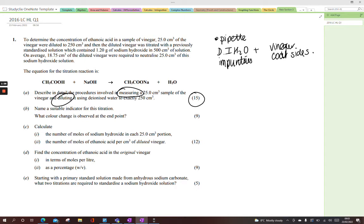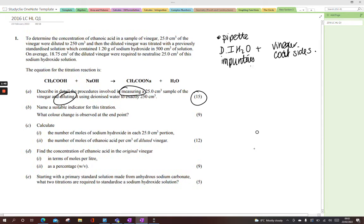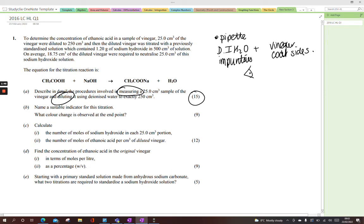Kind of maybe 9 marks for the measuring there. Rinse your pipette with the ionized water to remove impurities. Then rinse it with the vinegar solution to coat the sides. Use the pipette filler. Draw up 25 cm³ of the vinegar until the bottom of the meniscus rests on the calibration mark. Read at eye level. Couldn't beat it.